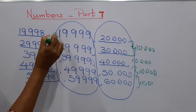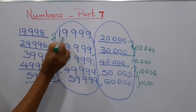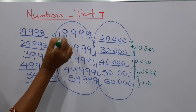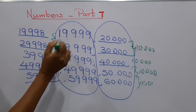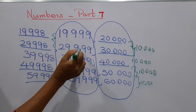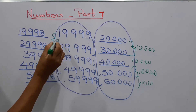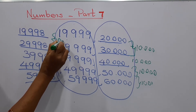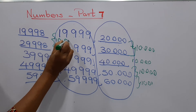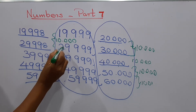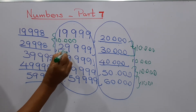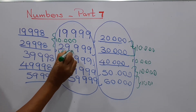In between 19,999 and 29,999, the common difference is also 10,000. Here also, 10,000.